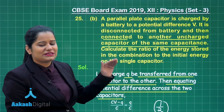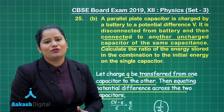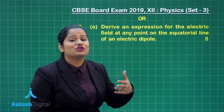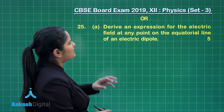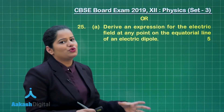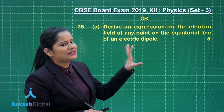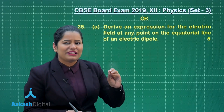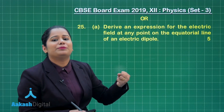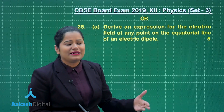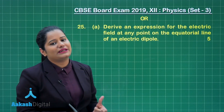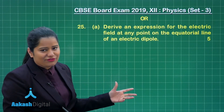Here we discussed the first choice of question number 25. Now let us move to the next choice of the same question, which again has two parts A and B. Part A says: derive an expression for the electric field at any point on the equatorial line of an electric dipole, and this part fetches 2 and a half marks. This is similar to question number 16, but in question 16 we needed to find the electric field at a point at distance y from the axial line. Let us look at the derivation.